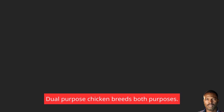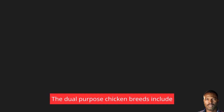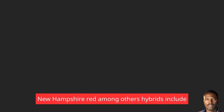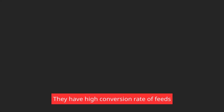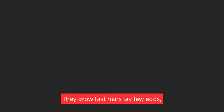Dual purpose chicken breeds — kept for both purposes. The dual purpose chicken breeds include Black Australorp. They provide high quality meat, have a high conversion rate of feeds into meat, grow fast, hens lay few eggs, they go broody, and they are heavier and bigger than layers.